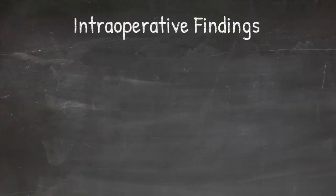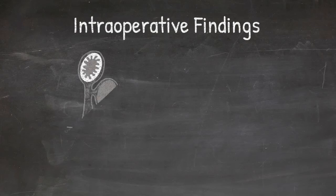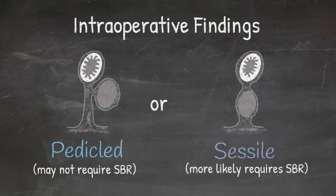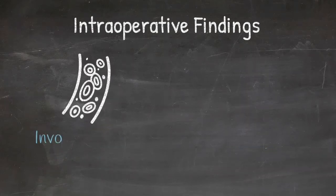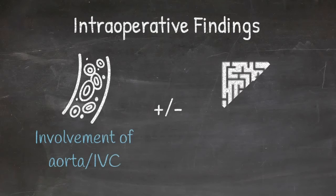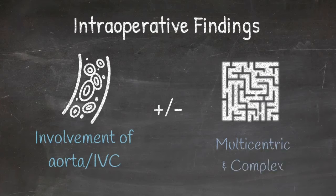Do mesenteric cysts always look the same once you're in the abdomen? Mesenteric and omental cysts can look very different depending on their location and how they are attached to the bowel. They can be pedicled, which is easier to resect because it may not require a small bowel resection, or they can be sessile or more incorporated within the mesentery, often requiring a bowel resection. Mesenteric cysts can also extend into the retroperitoneum and involve structures including the IVC or aorta, and they can be multicentric or complex with different lobules.